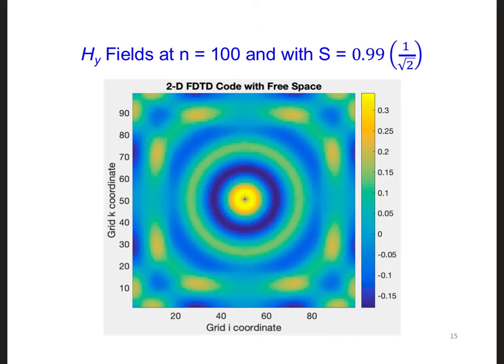Hopefully you saw the wave propagate further away from the source in a nice circular pattern. By the end of the 100 time steps, the wave should have reached the PEC and started to reflect from the four sides of the grid.